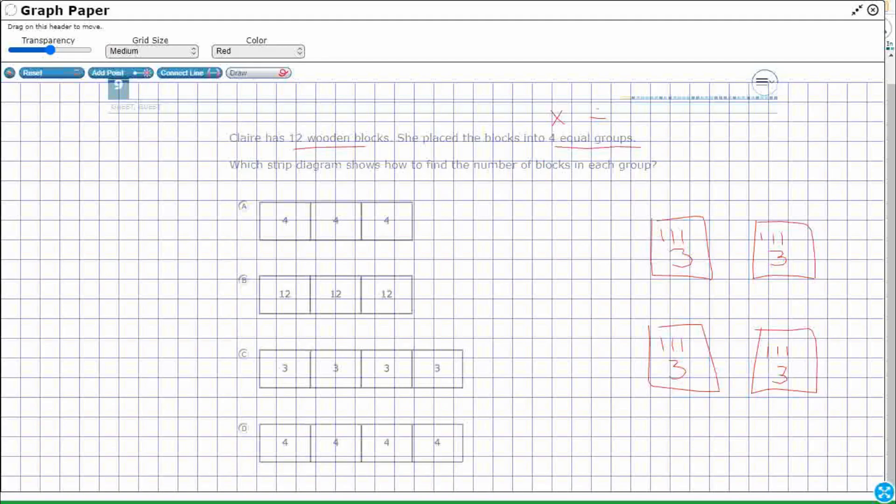Now, we can eliminate at least one of these answers simply by just adding up the numbers. Look at this, 4, all right, this is a strip diagram, so we're going to do 4 plus 4 plus 4, okay? So that makes 12. And then we're going to do 12 plus 12 plus 12. Here's the problem. Look at this, 36.